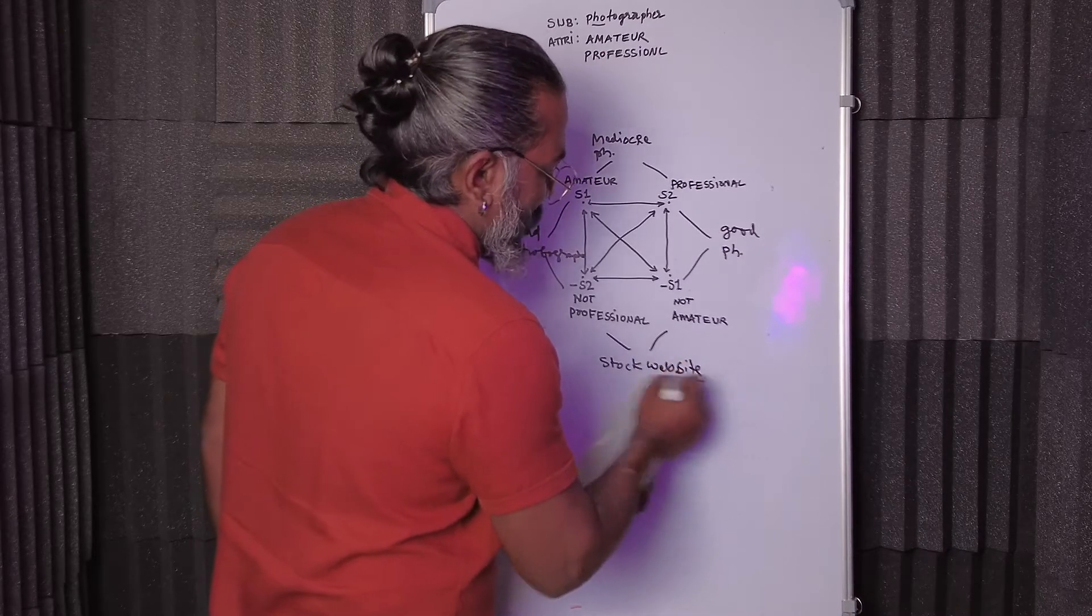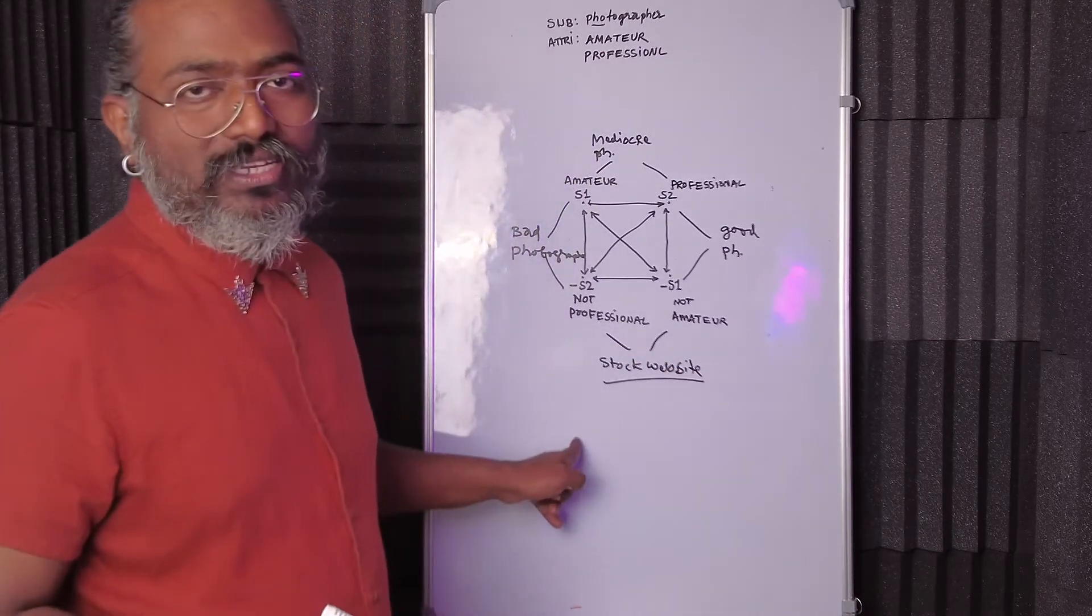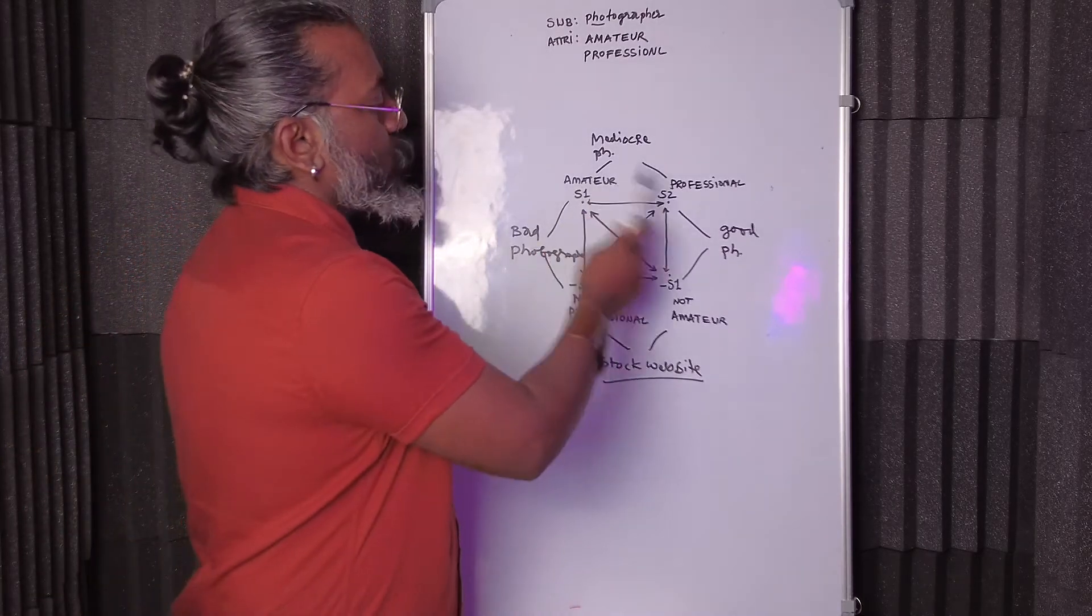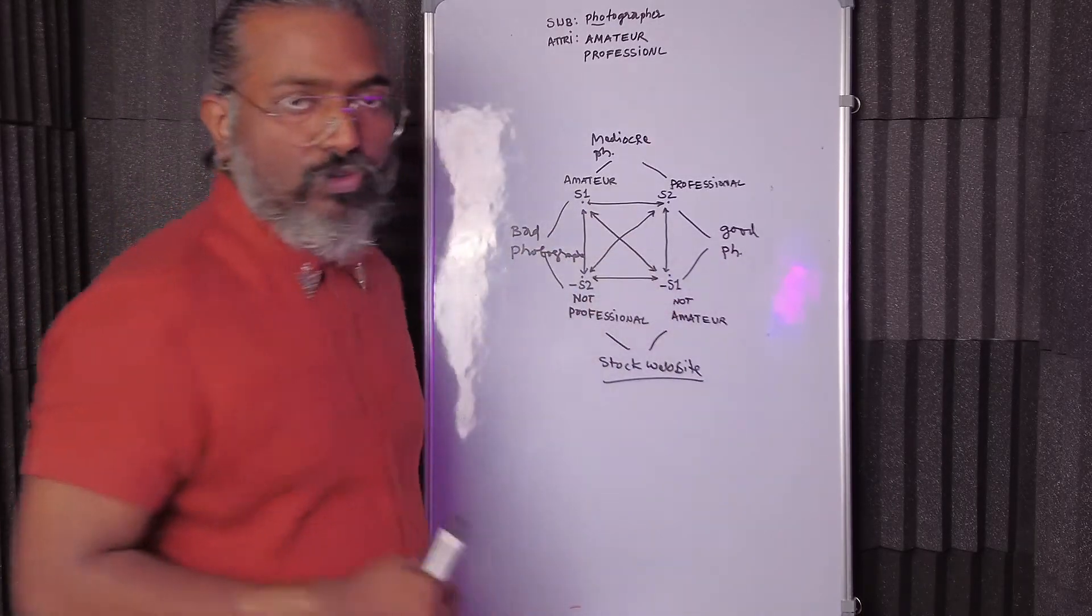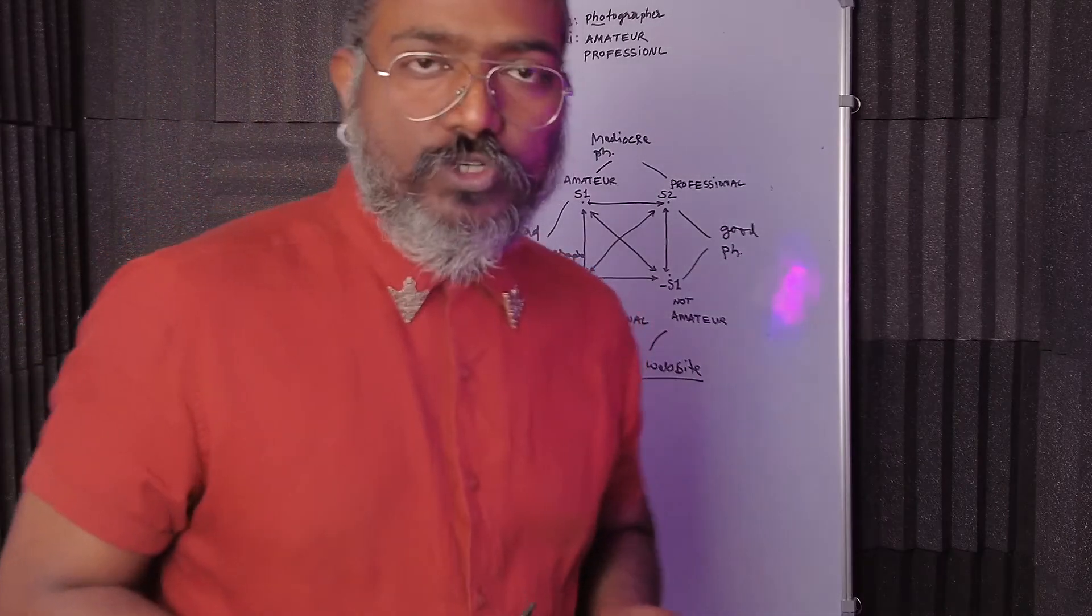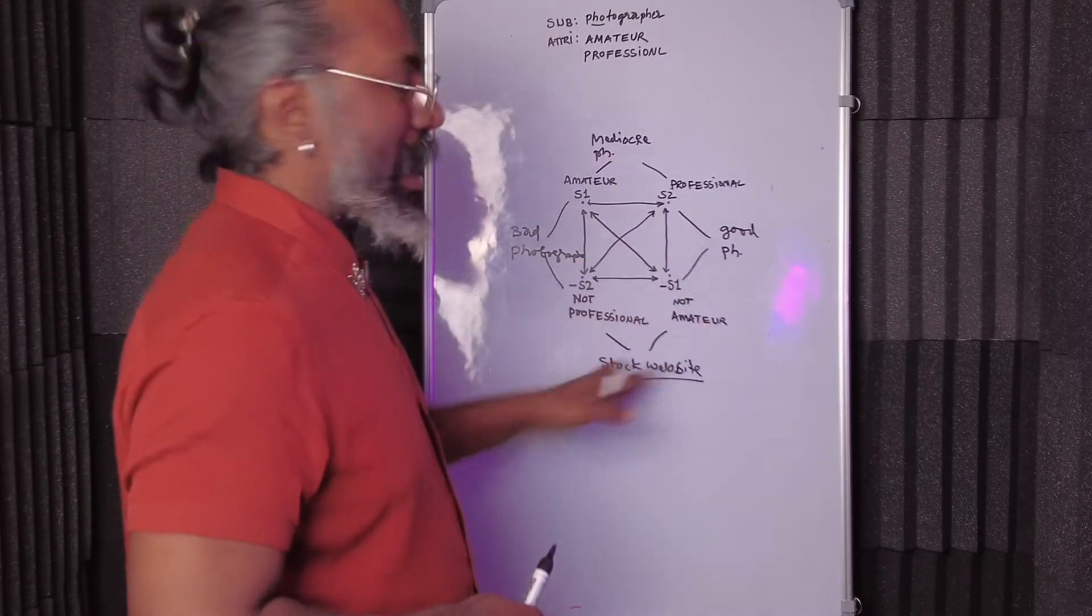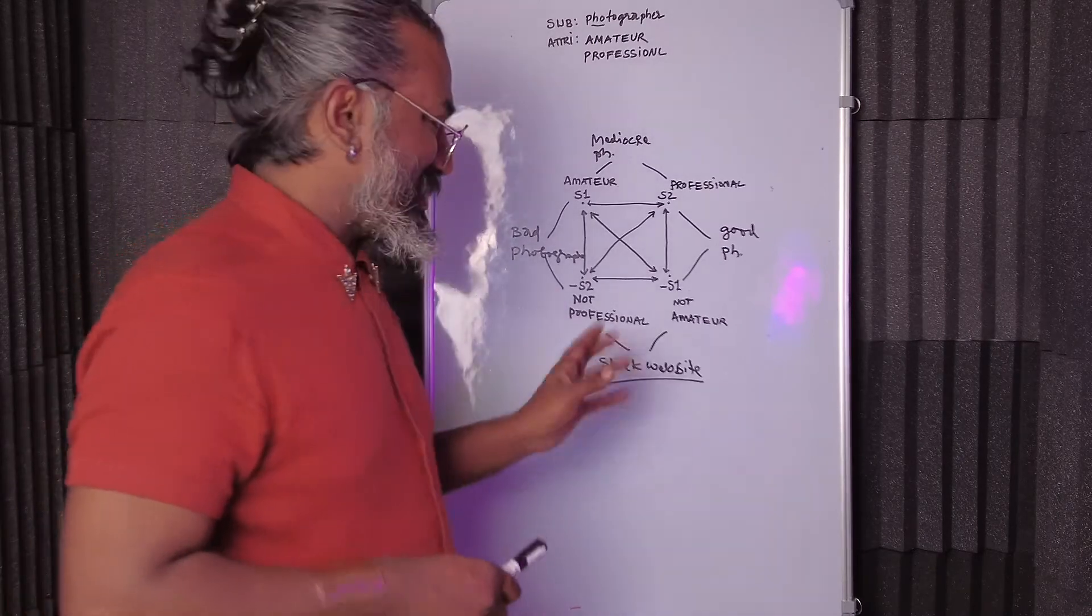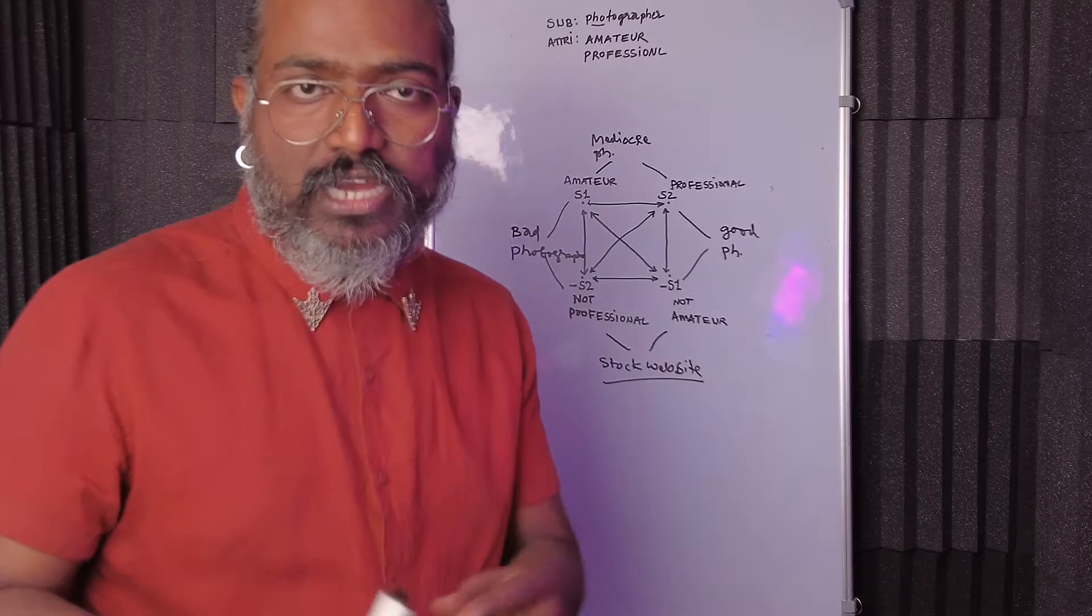You just select photographs from stock websites. So now you can see very clearly how there are four types of photographers that we're able to map on this particular semiotic square. And that's it for today's discussion.